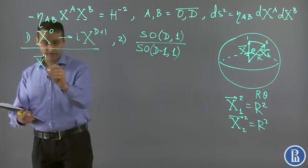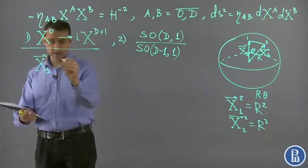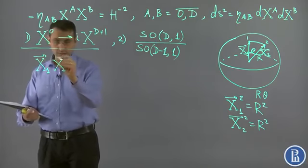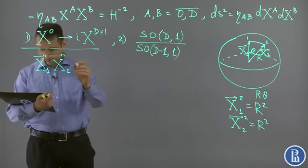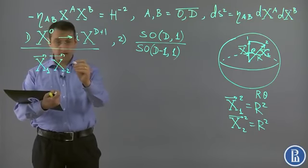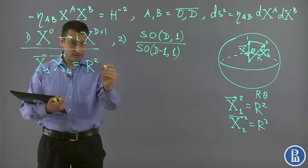On the sphere, we have x1 times x2, the scalar product, which gives us r squared times cosine of the geodesic distance.